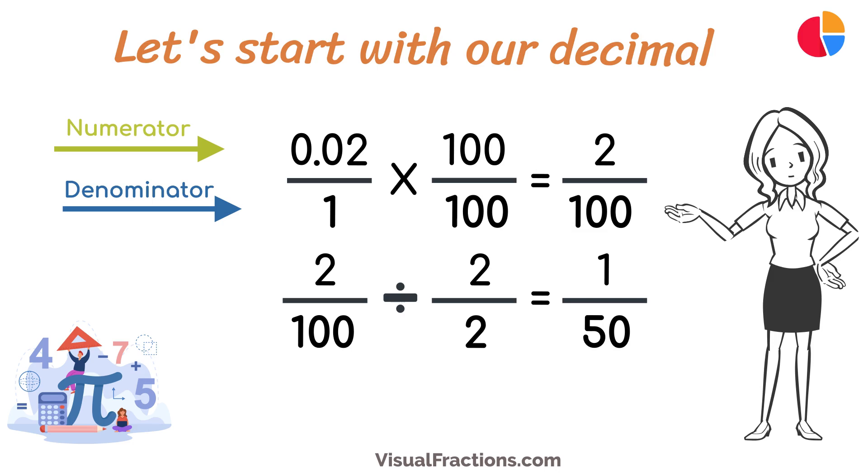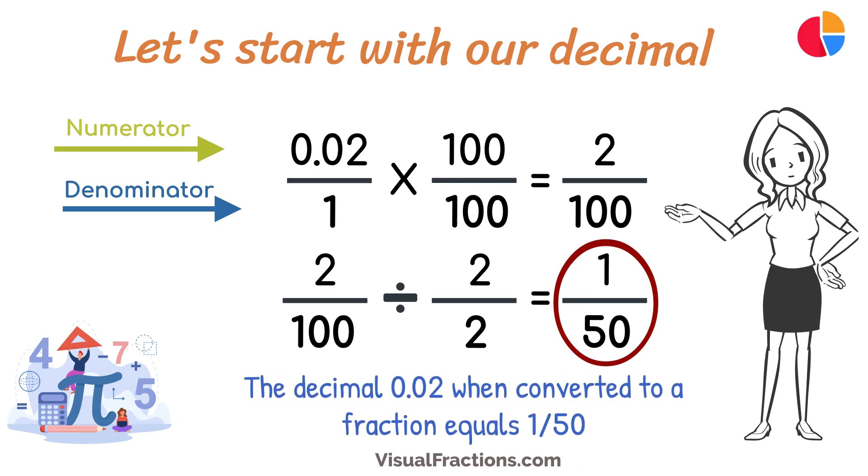So, 2 one-hundredths simplifies neatly to 1 fiftieth. And there you have it. The decimal 0.02 when converted to a fraction equals 1 fiftieth. This fraction is in its simplest form and cannot be further simplified.